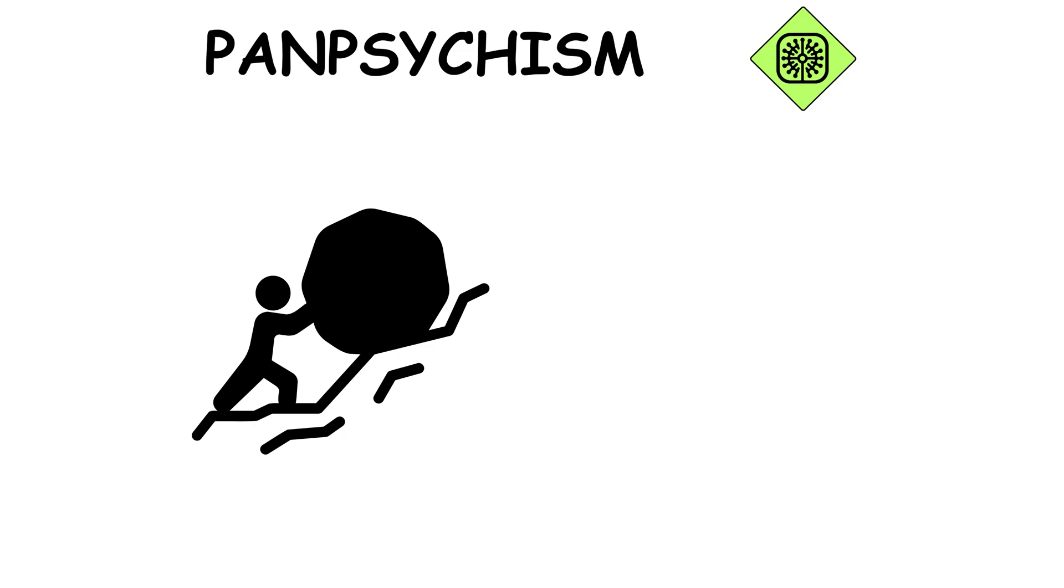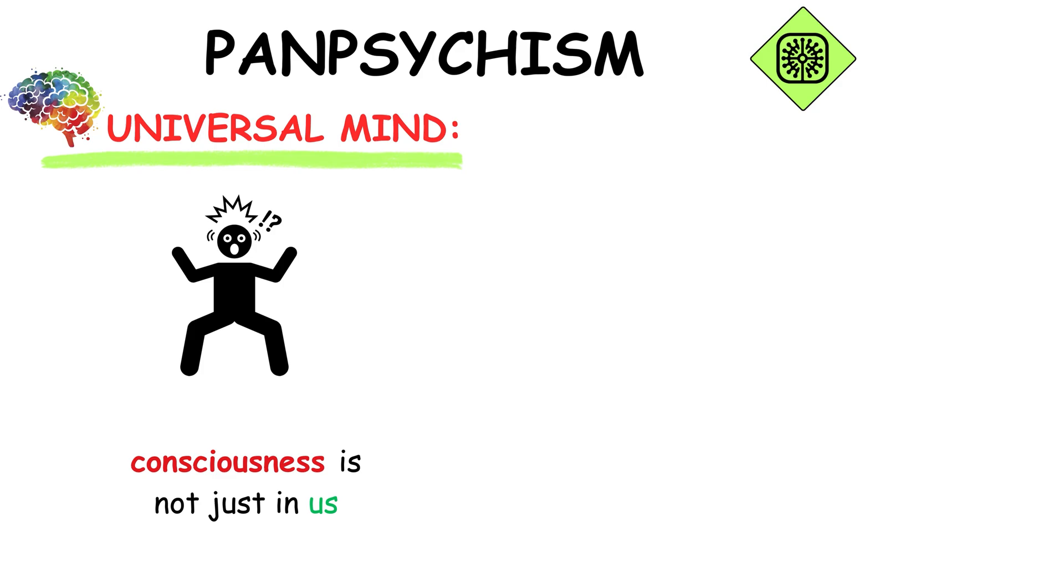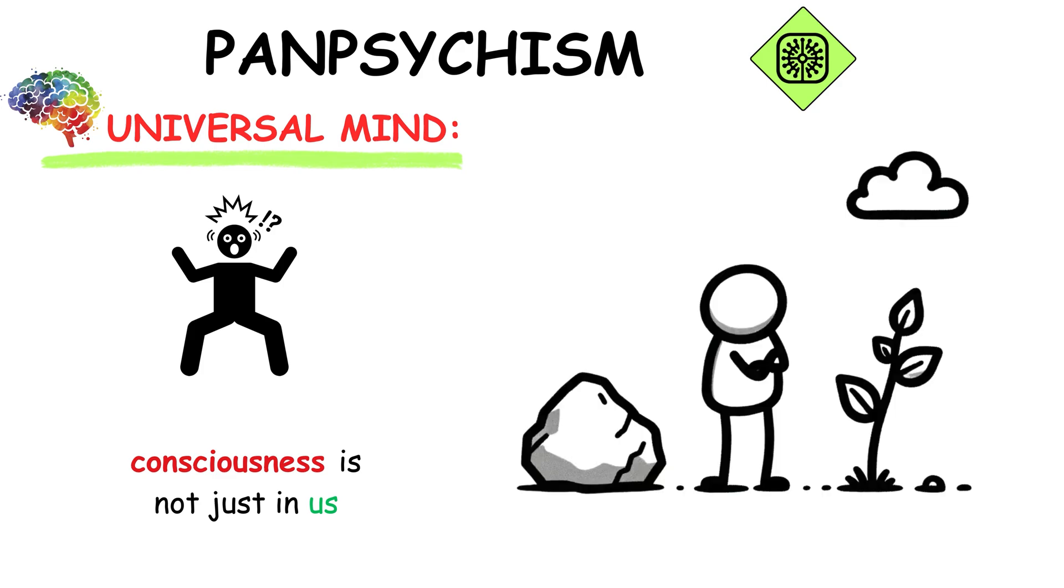Panpsychism challenges conventional views by suggesting that consciousness might be a fundamental, universal feature of all things. Panpsychism proposes a startling idea: consciousness is not just in us, it's a fundamental aspect of the universe, like space or time. It suggests everything has a form of consciousness, from rocks to radishes.